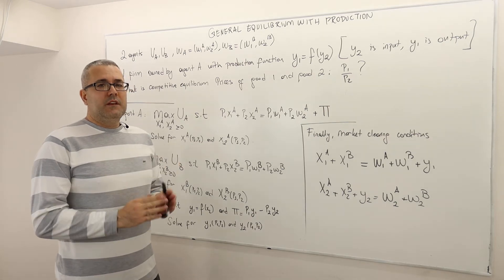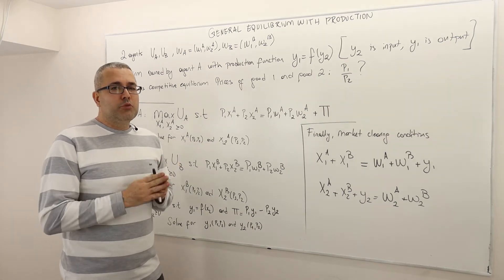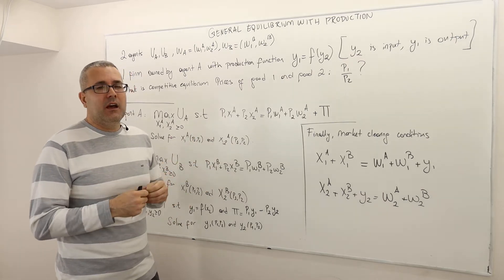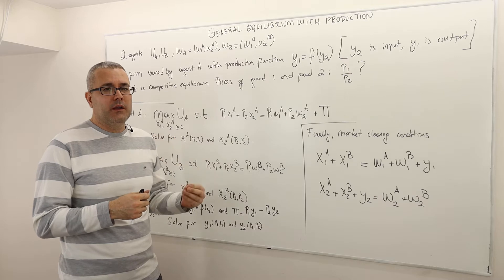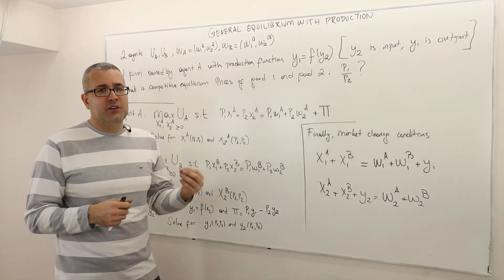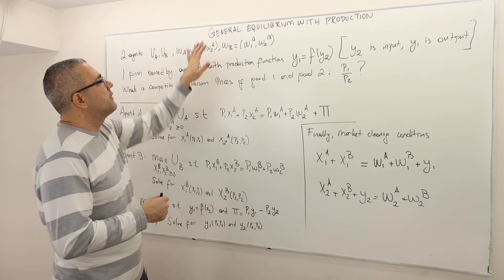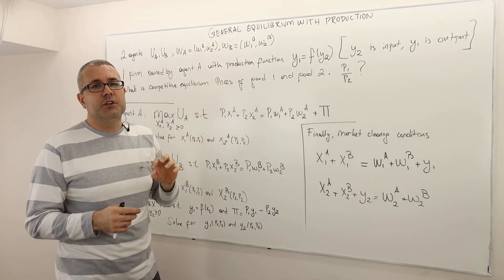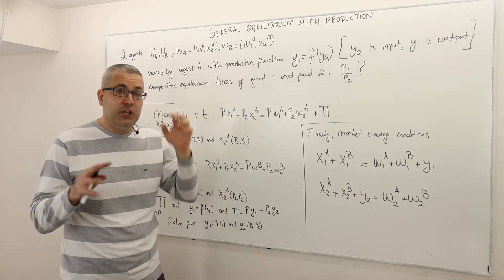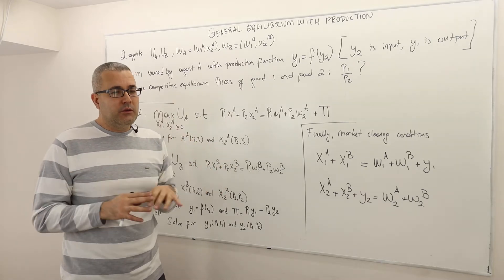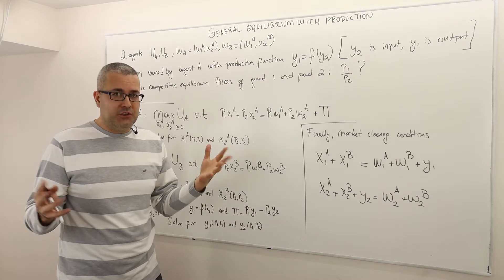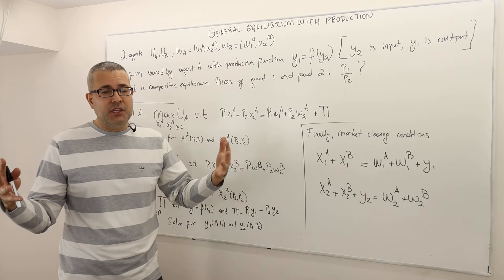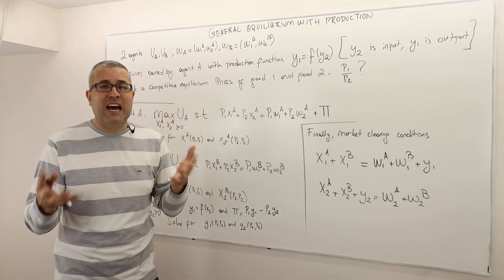In this episode, we bring everything we learned up until this point and analyze a perfectly competitive market where production is included. This is a general equilibrium model with production. For simplicity, we assume there are two agents, but you can extend this analysis to 100 agents or think of thousands of agents with three different types.